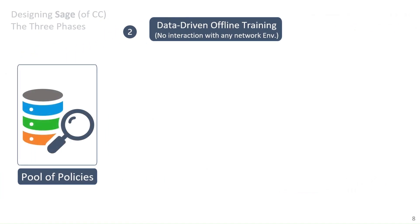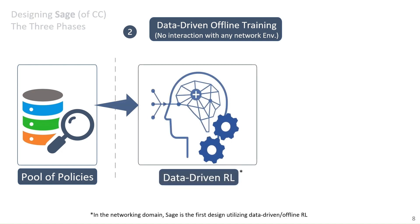From this point on, we have the pool of policies fixed. So there wouldn't be any interaction with any network environments. There wouldn't be any packets sent to any network environments. There wouldn't be any extra exploration, if you like. We just have the pool of policies and we just feed it into part of the system, which is data-driven reinforcement learning agent that we have. As a side note, SAGE, as far as we know, is the first design utilizing data-driven or offline RL in the context of networking. To see what are the differences between data-driven RL and the general RL that you have heard likely in other works, please check out our paper.